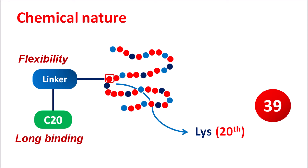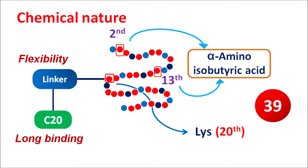Tirzepatide can bind to serum albumin, by which it is less metabolized and the duration of action is further increased. Similarly, the amino acids at the second and 13th positions are replaced with non-coding amino acids — specifically, alpha-aminoisobutyric acid is introduced at these positions. This means the polypeptide cannot be cleaved by DPP4 enzyme — Dipeptidyl Peptidase 4 — which naturally cleaves incretins like GLP-1 and GIP. Even though Tirzepatide acts as an agonist on these receptors, it is not cleaved by DPP4 enzyme because of these modifications, making this drug long-acting and more stable.